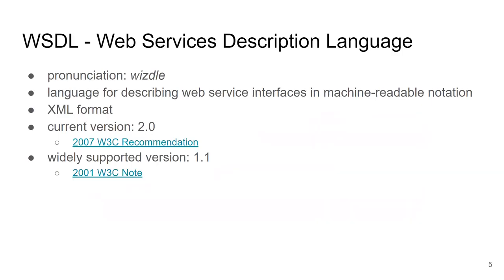WSDL is a W3C recommendation. As with SOAP where we had SOAP 1.1 and SOAP 1.2 — where 1.1 is the more widely used one — with WSDL the situation is similar. There is WSDL 1.1, which is widely supported and used but is not a formal standard, and then there is WSDL 2.0, which is a web standard but not so widespread. Each web service may implement a different combination of WSDL versions, SOAP versions, and transport protocols.